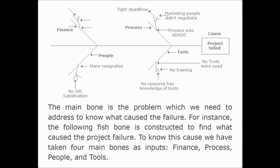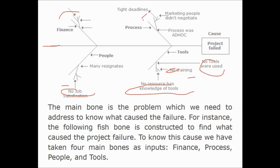Let me show you the Ishikawa diagram. The main bone represents the problem we need to address — for instance, what caused the project failure. This fishbone is constructed to find the cause of project failure. We have taken four main bones as input: Finance, Process, People, and Tools. Under Finance, variable factors include many resignations and no job satisfaction. Under Tools, factors include no training, no tools were used, and no resource has knowledge of tools. Under Process, the process was ad hoc, marketing people didn't negotiate, and there were tight guidelines. All these things can cause a project to fail, and their impact can also be seen. This is the Ishikawa or fishbone diagram.